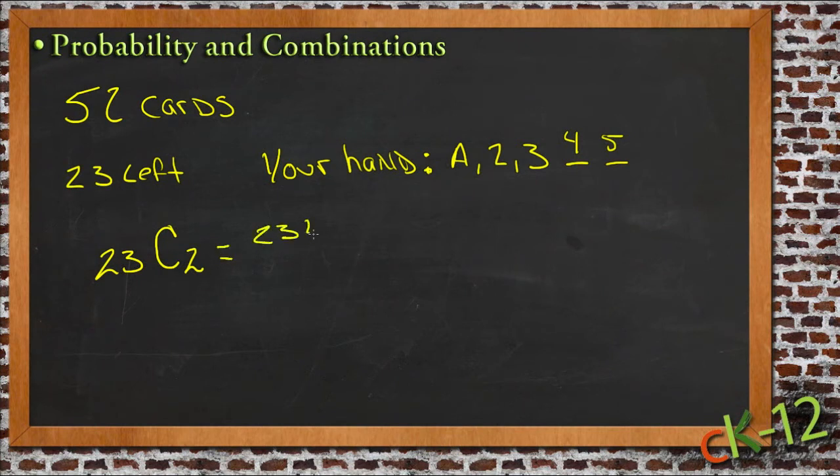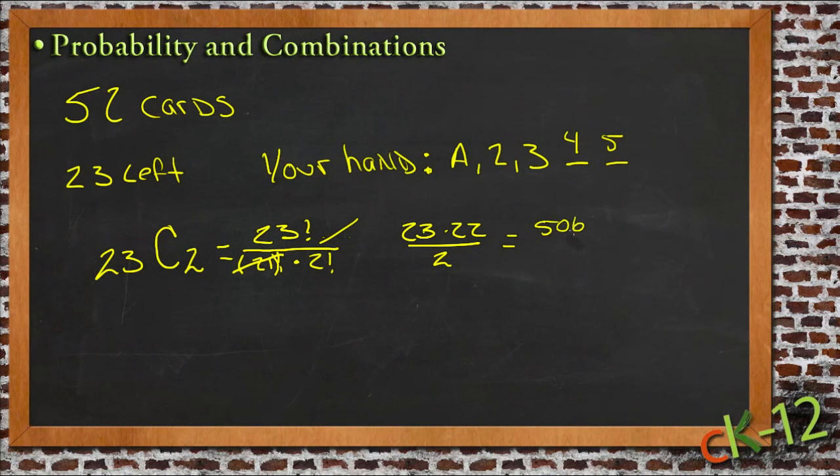So to figure that out, we'd start by taking 23 factorial and dividing it by 23 minus 2 factorial, or 21 factorial, and then multiplying that by 2 factorial. Which I know sounds really complex, but it's not really that difficult because the 23 and the 21 factorial are pretty close together. All the 21 and below we're going to cancel anyway. All we're going to have left on top is 23 times 22, and then on the bottom we're going to have 2 factorial, which is 2 times 1, or 2. So 23 times 22—let me get on my calculator real quick—23 times 22 is 506. So there's 506 total possibilities, and since the order doesn't matter and there's two cards, we divide that by two, which gives us 253. So out of the 23 cards left, there are 253 different ways you could draw two cards.